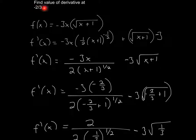In this problem, we want to find the value of the derivative at negative 2 over 3. So we have this function, and it's going to be product rule.